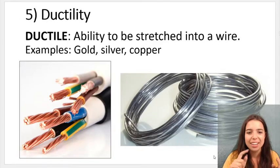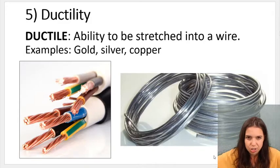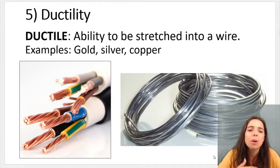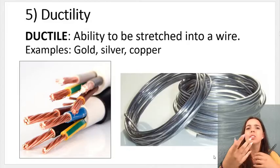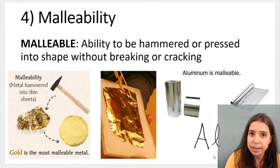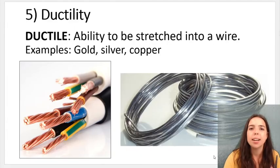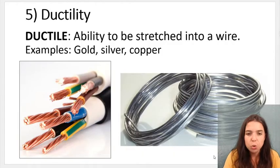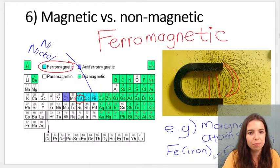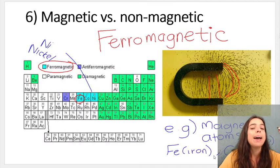Ductility is the ability to be stretched into a wire. Again, gold, silver, and copper are good examples — copper wires, gold and silver jewelry. Without the properties of malleability and ductility, using these materials as jewelry or copper wires in everyday life wouldn't be possible.